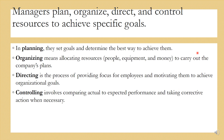In planning, they set goals and determine the best way to achieve them. In organizing, they allocate resources — people, equipment and money — to carry out the company's plans. Directing is the process of providing focus for employees and motivating them to achieve organizational goals. And controlling involves comparing actual to expected performance and taking corrective action when necessary.